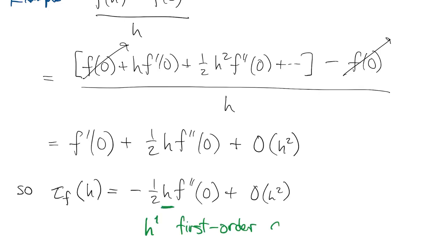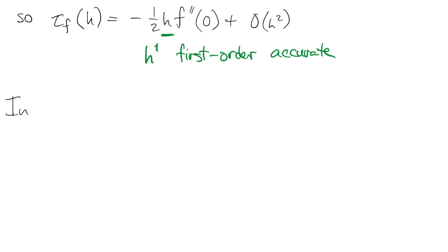The most important feature is the exponent of h in the leading term. Since it's equal to one here, we say this finite difference method is first order accurate.